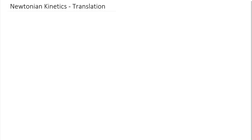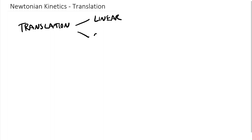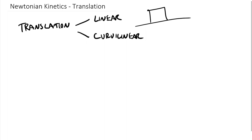So if we have translation, keep in mind that translation has two different forms. We can either have linear translation or we can have curvilinear translation. Now linear is just as it sounds — if we had a surface and we had a block on this surface and we were accelerating this block up this ramp, that's just going to be linear motion. It's going to move in a straight line going up that ramp.